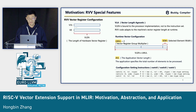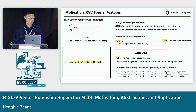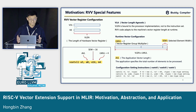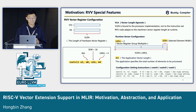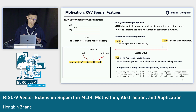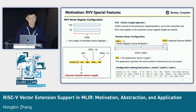We can put these three configuration points into instructions: vsetvli, vsetivli, and vsetvl. For example, with vsetvli we specify how many elements we want to process in the following instructions. With SEW16 we use 16-bit integer elements, and with LMUL×2 we use two registers grouped together. This instruction gives us the dynamic runtime vector length, which is VL.